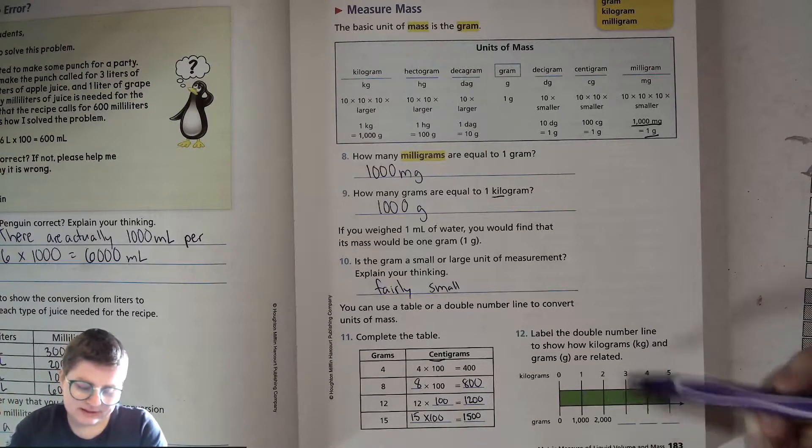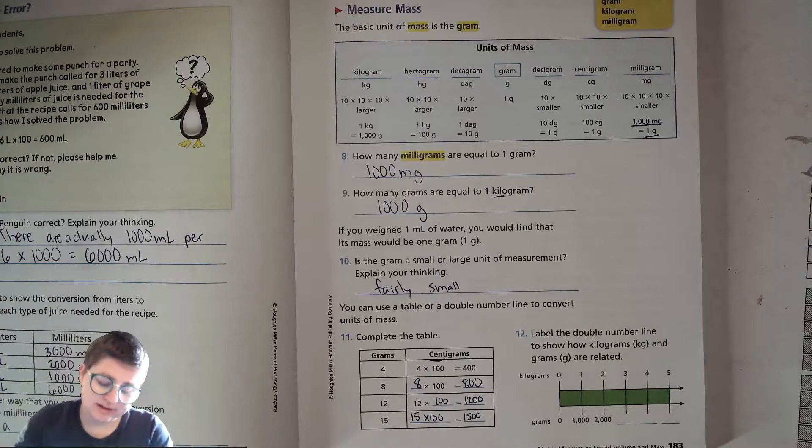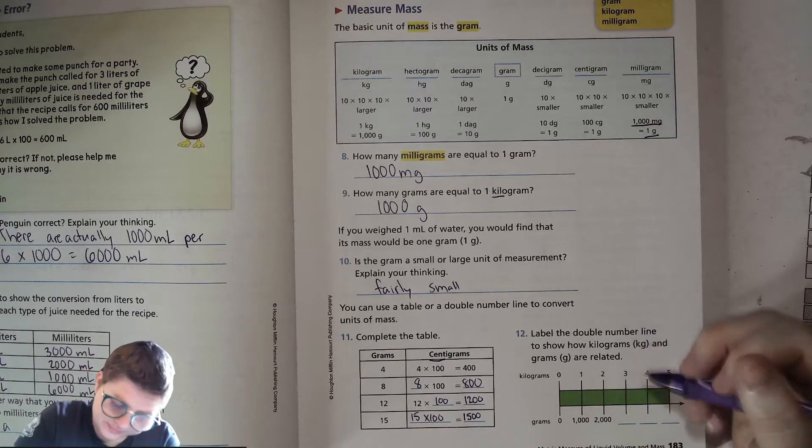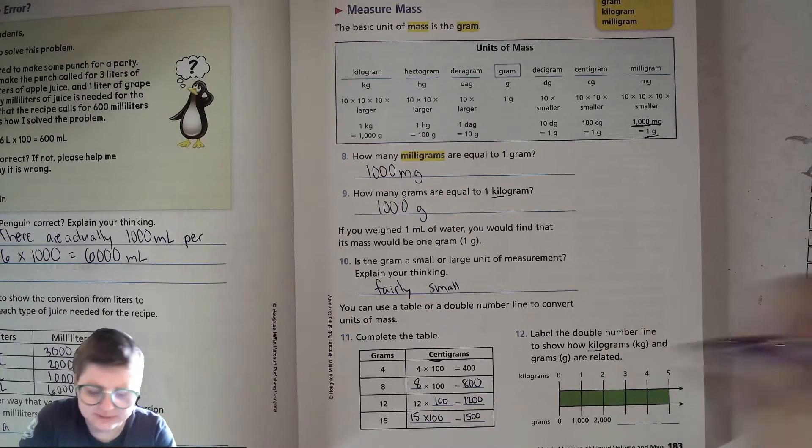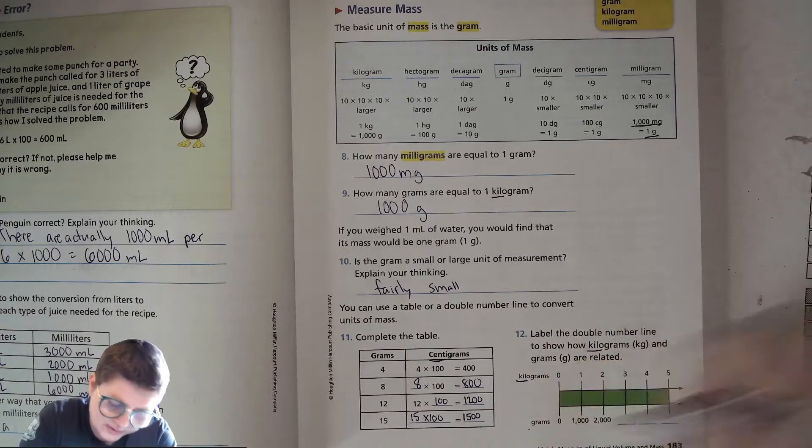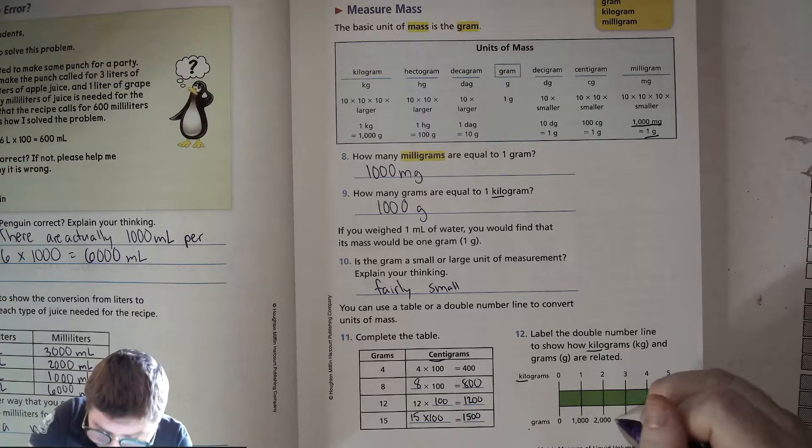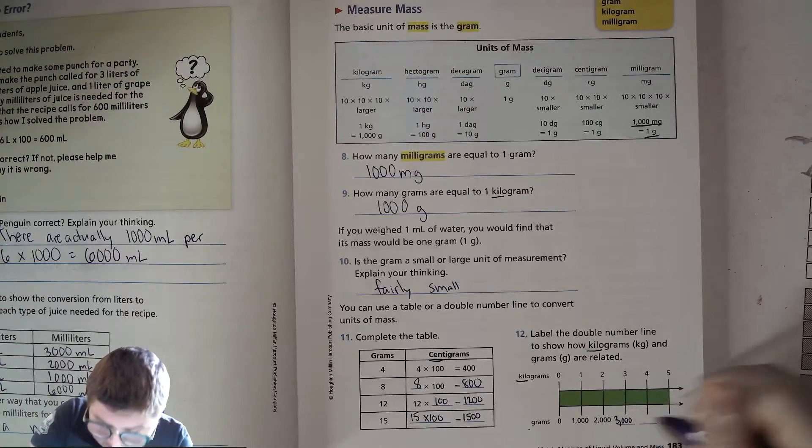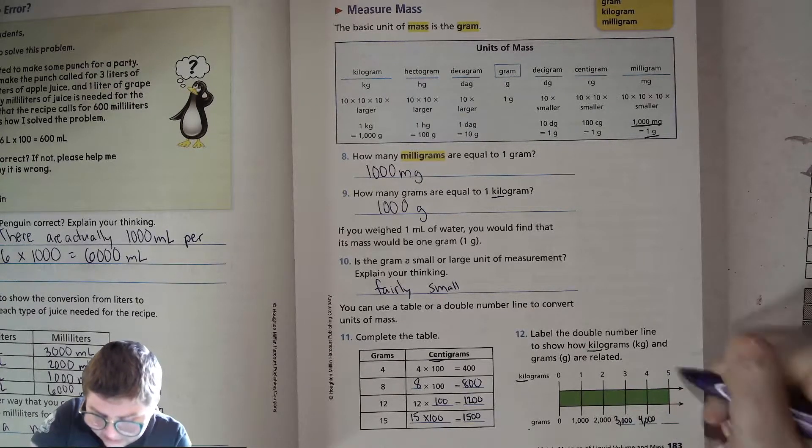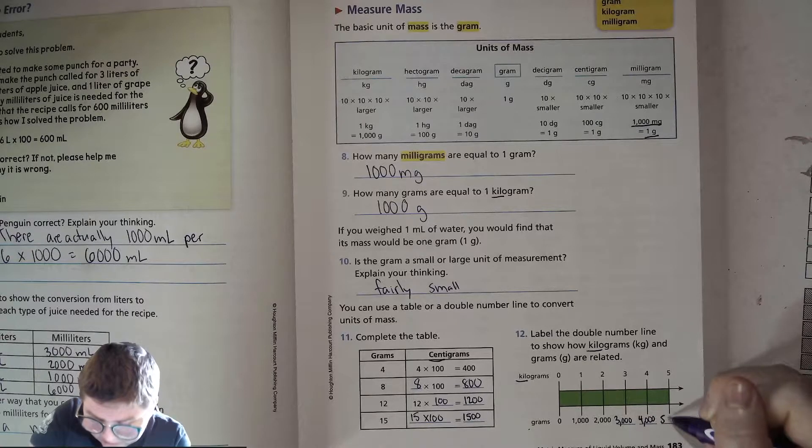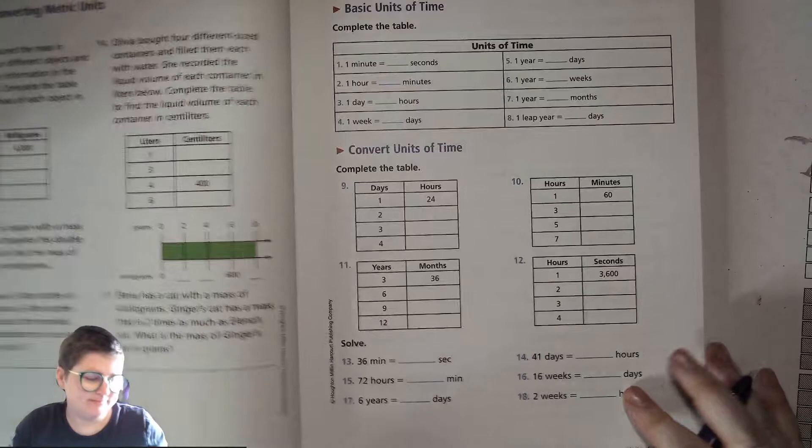We're going to keep converting on this number line. We're just multiplying things by 1000 because we're converting from kilograms to grams. So 3 kilograms is going to be 3000 grams. 4 kilograms is 4000 grams. 5 kilograms is 5000 grams. Okay.